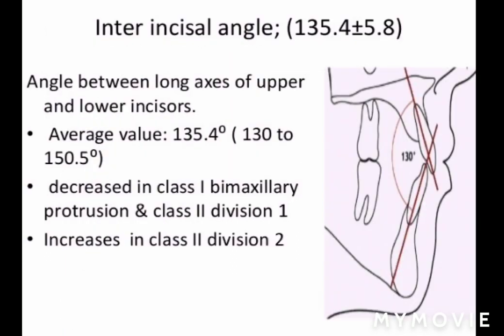The last dental parameter is the interincisor angle. Its mean value is 135.4 degrees — the angle between the long axis of the upper incisors and the long axis of the lower incisors. It will be decreased in Class 1 bimaxillary protrusion and Class 2 Division 1 cases where the maxilla is protrusive, and increased in Class 2 Division 2 cases where the maxilla is retrusive.